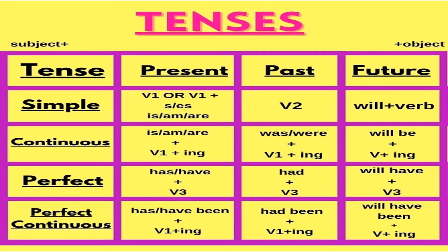Dear children, let's observe this table. Here I have written present tense, past tense, and future tense. I will use the pen and show it to you. This is present tense, past tense, and future tense.